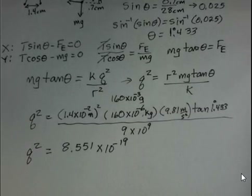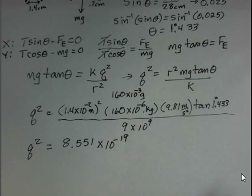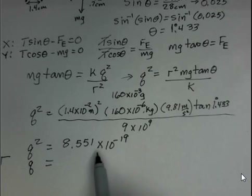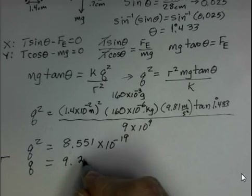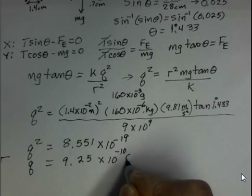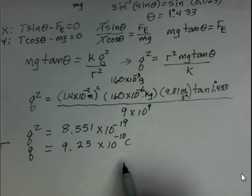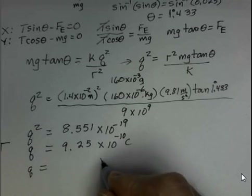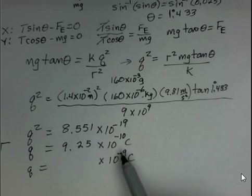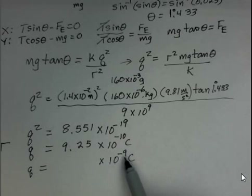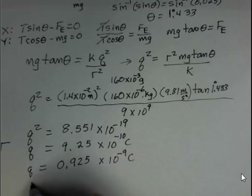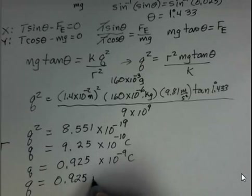We can't stop there — we want Q, not Q squared. So take the square root of both sides. The square root of Q squared gives us Q, and the square root of 8.551 times 10 to the minus 19 gives us 9.25 times 10 to the minus 10 coulombs. Converting to the nano prefix — nano is 10 to the minus 9 — making the power one greater means we make the number smaller, so Q equals 0.925 nanocoulombs.